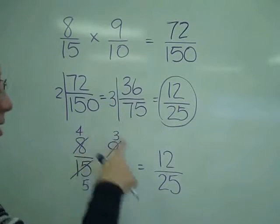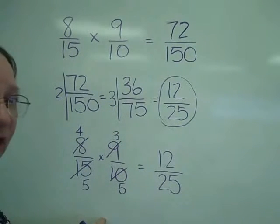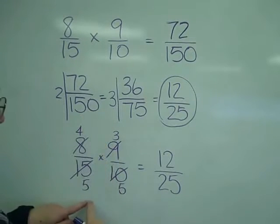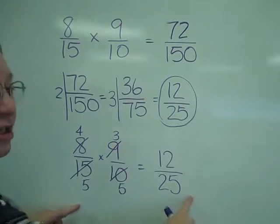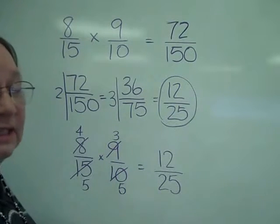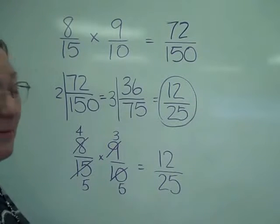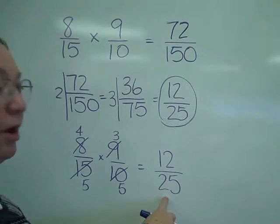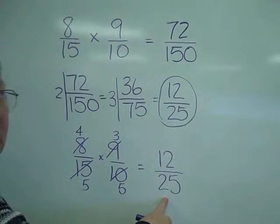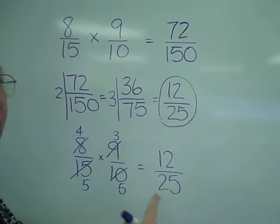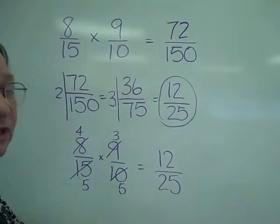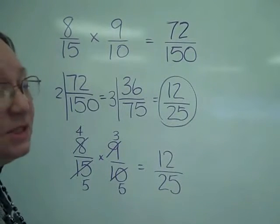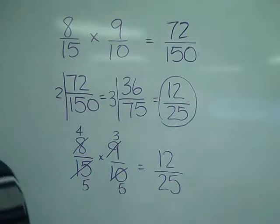Notice that 4 times 3 is the 12 I got from the big problem, and 5 times 5 is my 25. With the 8 and the 10, I'm reducing by 2, and with the 9 and the 15, I reduced by 3 — this kept my numbers smaller. This method in general is a little less painful for people. Also remember that at this point, if I had an improper fraction, I would have to reduce it down or simplify it.